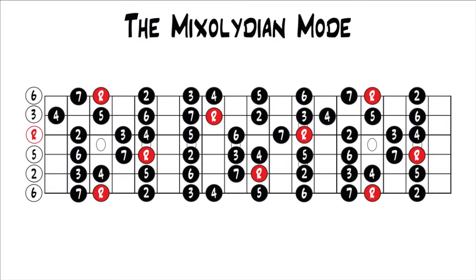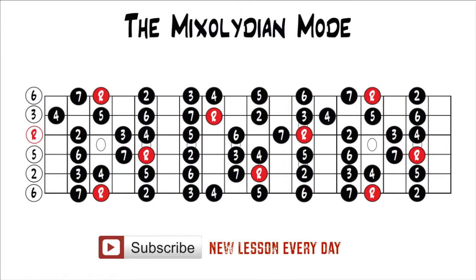If you'd like to go back and start at the beginning, you can click the link on the screen. We've been taking an in-depth look at all the modes individually — the first mode, Ionian; the second mode, Dorian; the third mode, Phrygian; and the fourth mode, Lydian. Now we're taking a look at the fifth mode, Mixolydian. Just like all the other lessons, we're looking at these in parallel, so they all have the same root, and we're keeping the root in G because it falls in a nice place on the fretboard.